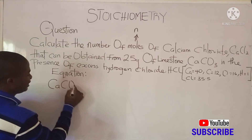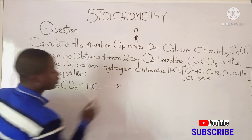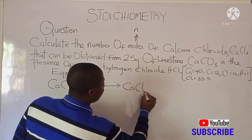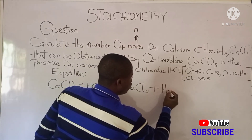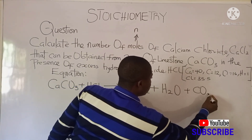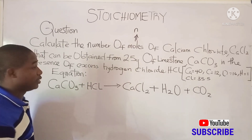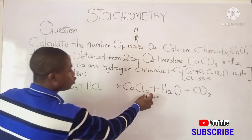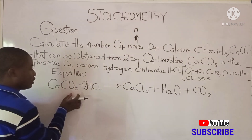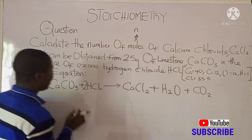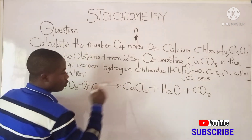Limestone (CaCO₃) reacts with hydrogen chloride (HCl). Let's write and balance the equation: CaCO₃ + HCl → CaCl₂ + H₂O + CO₂. To balance this equation, we need 2 atoms of chlorine on the left, so we place a coefficient of 2 before HCl. We get 2 hydrogen atoms, 3 oxygen atoms on each side, and 1 carbon and 1 calcium on each side — the equation is balanced.